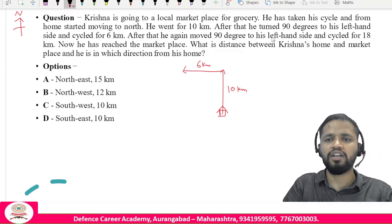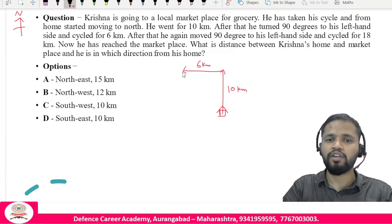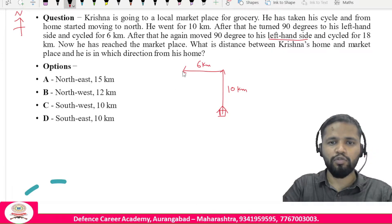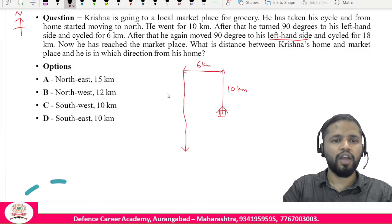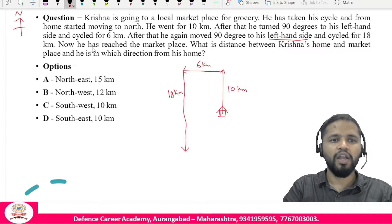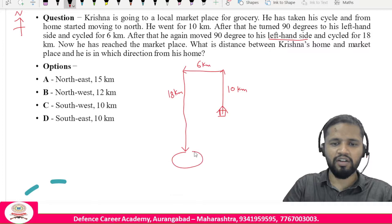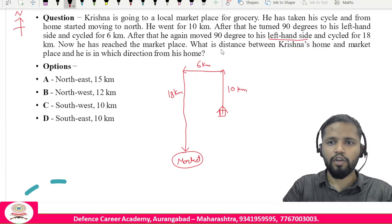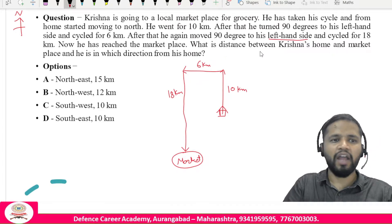He again moves 90 degrees to his left and cycles 18 kilometers. When facing west, turning left means heading south, so he travels 18 kilometers south and reaches the marketplace.